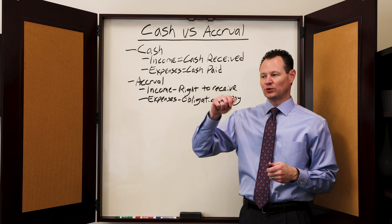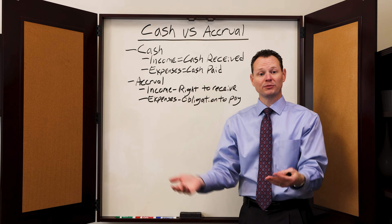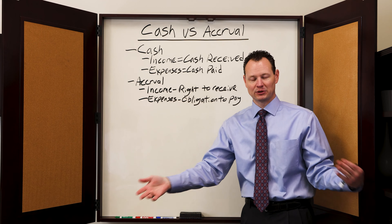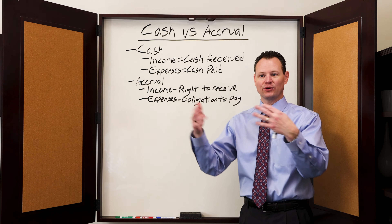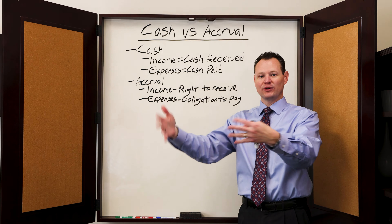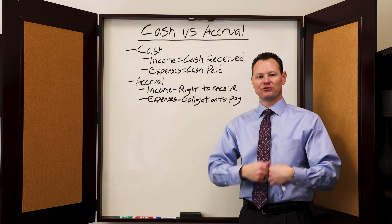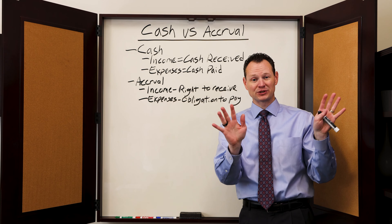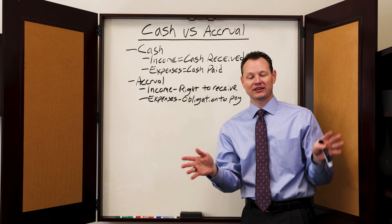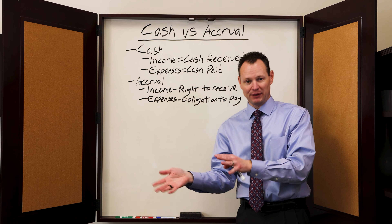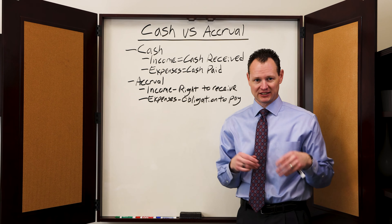So it's better to use the accrual method when you have greater payables than receivables. If you have greater payables, you're able to deduct those payables when they come in. So look at the receivables and look at the payables — if you have more receivables, you want to be on the cash method so you don't have to pick up those receivables as income until cash comes in. If you have more payables, you want to be under the accrual method so you can deduct your payables before you pay them, even though you have to recognize income before the cash comes in.